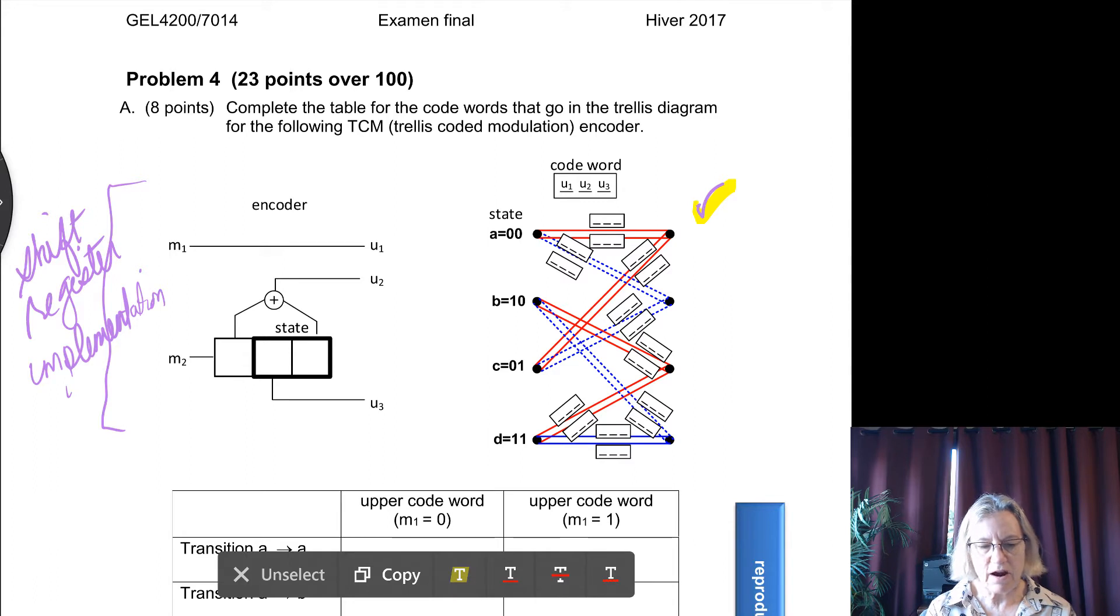So you can see that there are two inputs, so we would say that k equals 2. There are three outputs, so we would say n equals 3. So this is a rate two-thirds code.